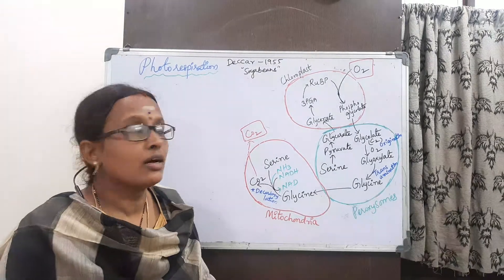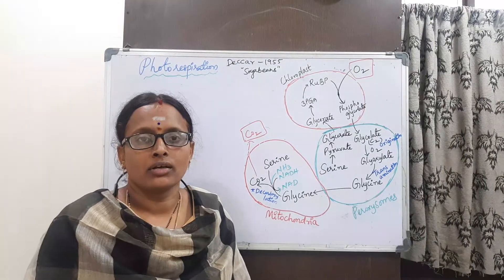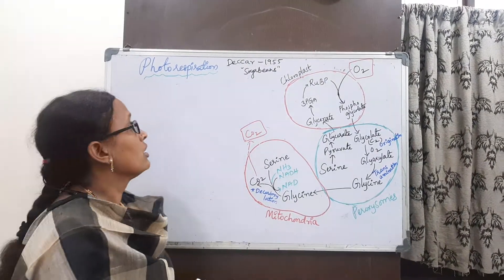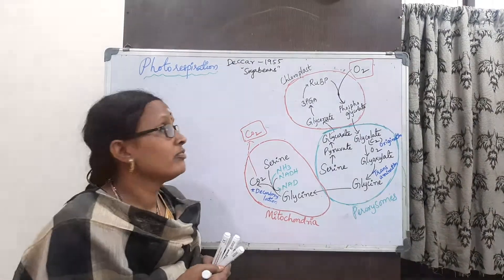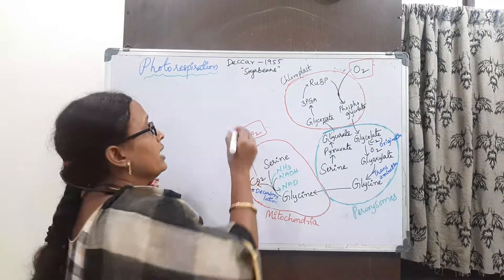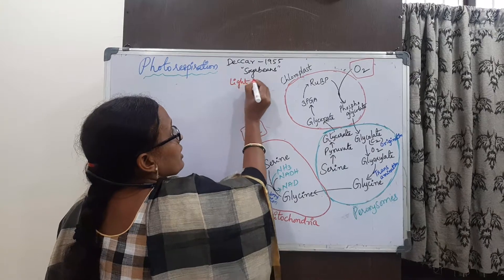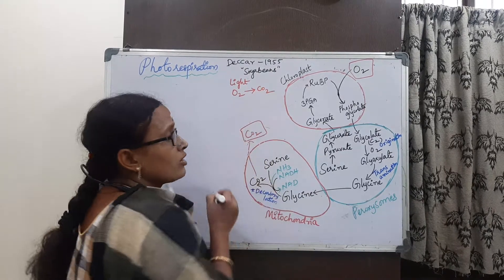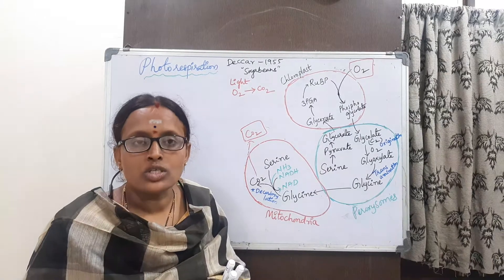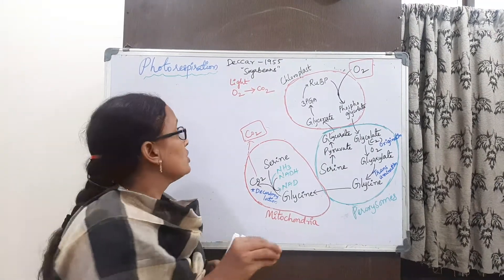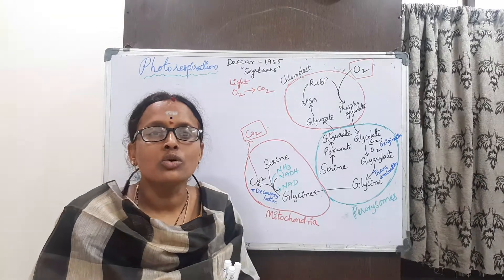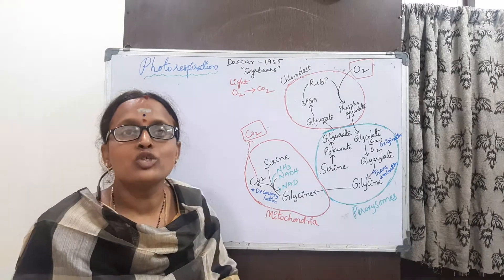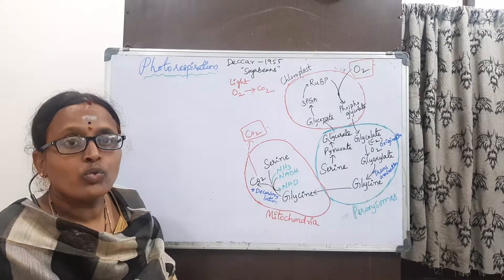The next topic is photorespiration. This was first observed by a Decker scientist in 1955 in soybeans. What he observed was that in the presence of light, plants are taking oxygen and they are releasing carbon dioxide — similar to our respiration, where all animals take oxygen and release carbon dioxide.